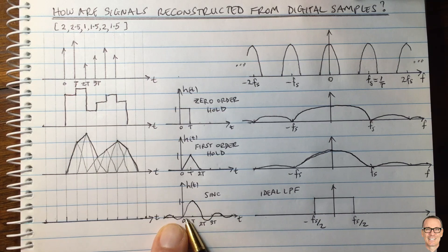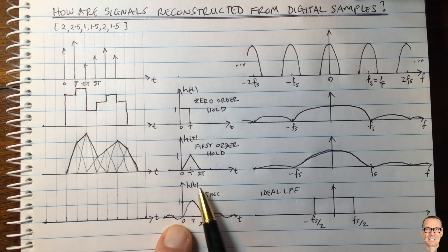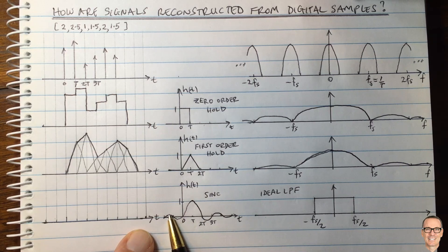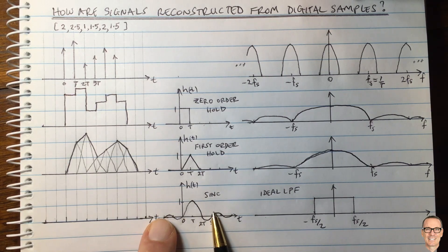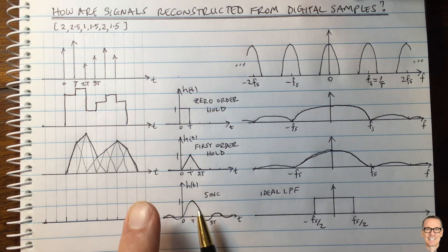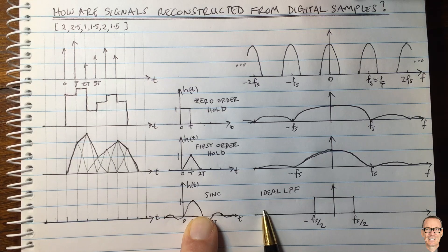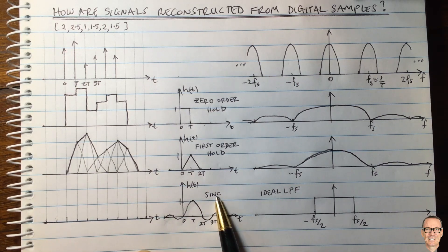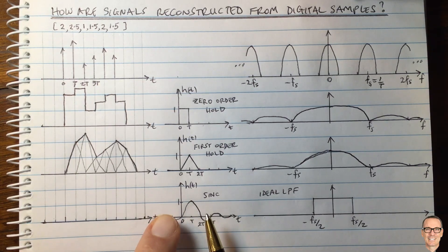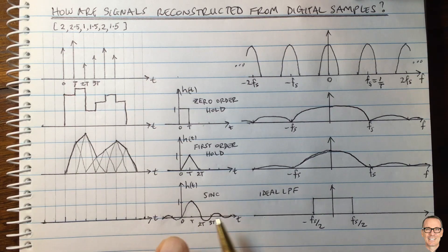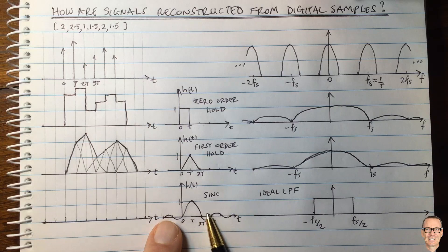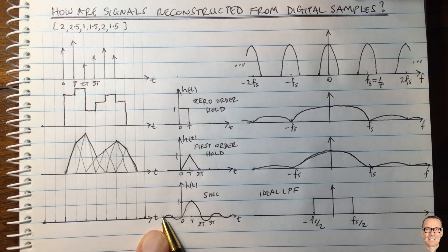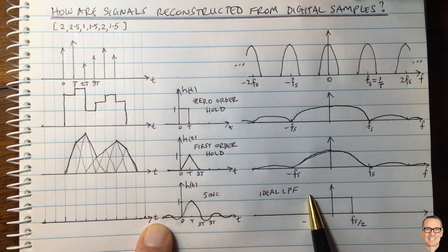The time-domain impulse response is the inverse Fourier transform of the ideal low-pass frequency response, which is a sinc function. The sinc has a time offset, and actually the delay is infinite — the sinc goes to negative time. In reality, you'd need to shift the whole thing to positive time for a causal system, and you'd have to shift it an infinite amount because the tail of the sinc goes back to negative infinite time. This is why we call it an ideal low-pass filter — it gets rid of all the copies, but you can't implement it in practice.